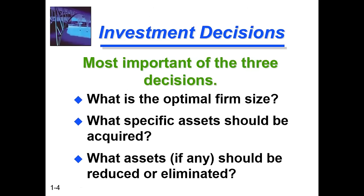Third, financial management is concerned with the management of assets — how assets are managed to get maximum output. The firm size should be appropriate — small or large, whatever suits the firm. What specific assets should be acquired for your business? For example, if it is a manufacturing firm, the type of assets is very important. If you have a furniture business, the wood — what type it is, where it is sourced from — matters for your investment decisions.